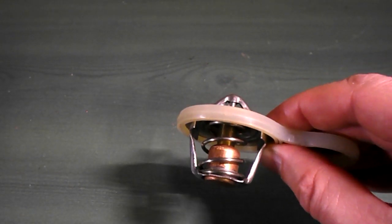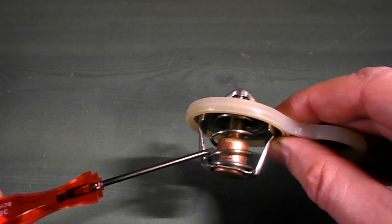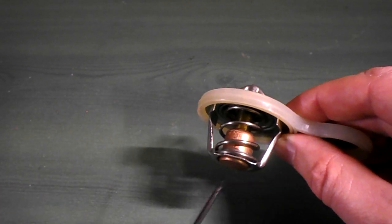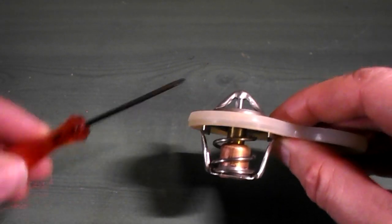Essentially how this works is the cylinder here is filled with wax and once the wax melts, there's a rod inside which pushes upwards and opens the valve.